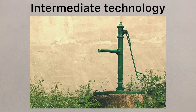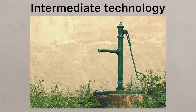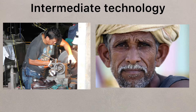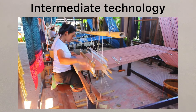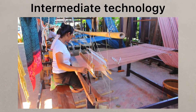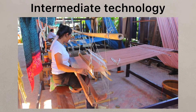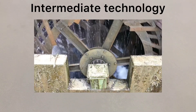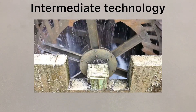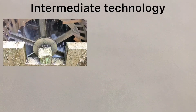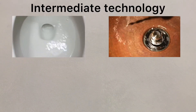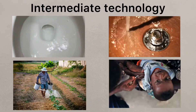Intermediate technology is important because it is a sustainable and appropriate form of technology that uses the skills and knowledge on a local scale. It will fit into the local environment and encourages more employment, without using technology that may put people out of work. Intermediate technology is usually small scale, and will often focus on water supply or sanitation, agriculture or health.